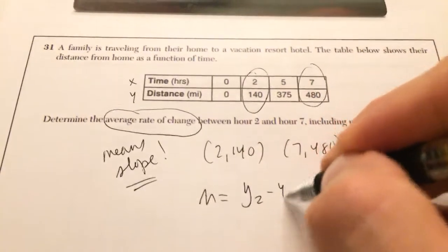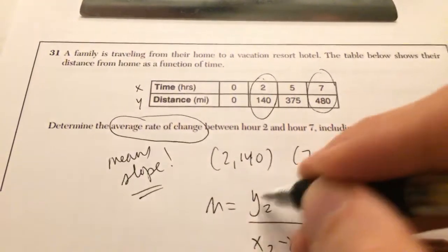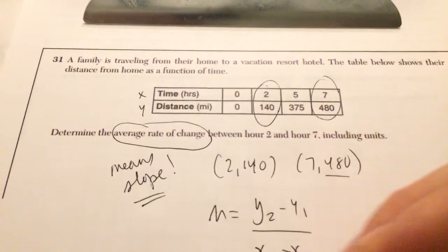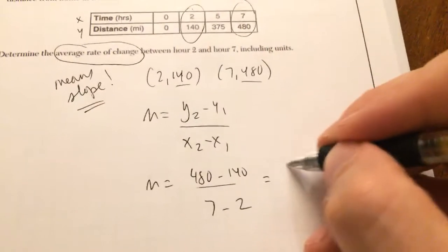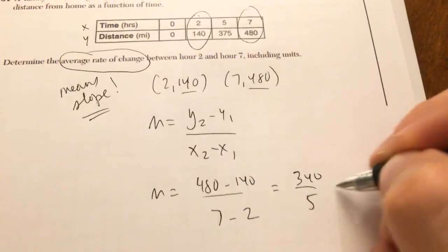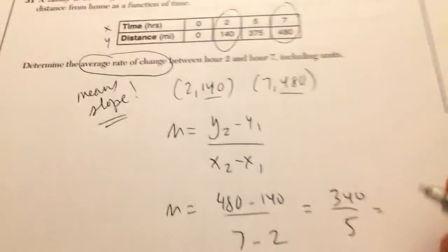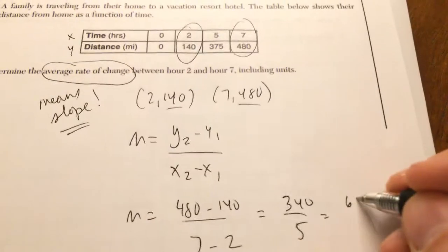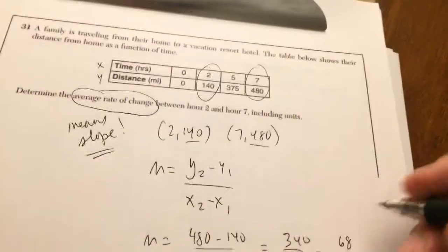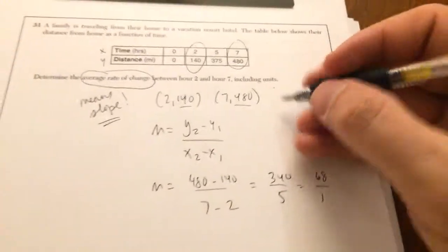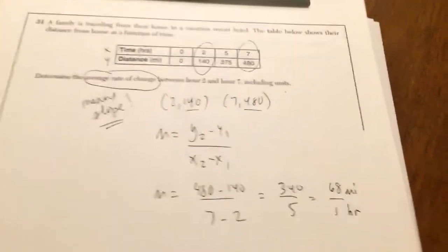So it's Y2 minus Y1 over X2 minus X1. The second Y value is 480. The first Y value is 140 over 7 minus 2. This is 340 over 5. And I get 68. You could say 68. You could say 68 over 1, including units. So the Y represented distance. So I'm going to say 68 miles per hour.